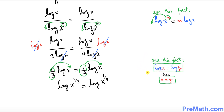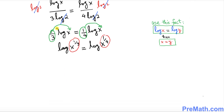Now we apply the rule that if log of x equals log of y, then x equals y. Here our two expressions play the role of x and y, so we can simply write x to the power 1 over 3 equals x to the power 1 over 4.